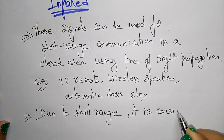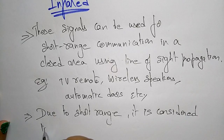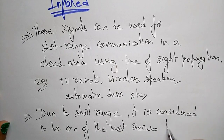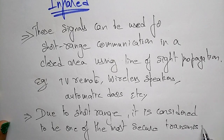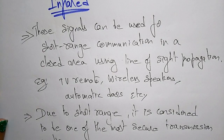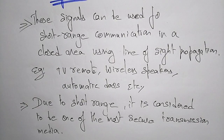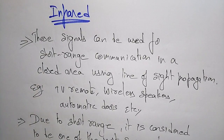Due to its short range, infrared is considered one of the most secure transmission mediums. When compared to radio waves or microwaves, infrared is more secure because it only communicates within a short range. So these are the three types of unguided transmission medias: radio waves, microwaves, and infrared rays.